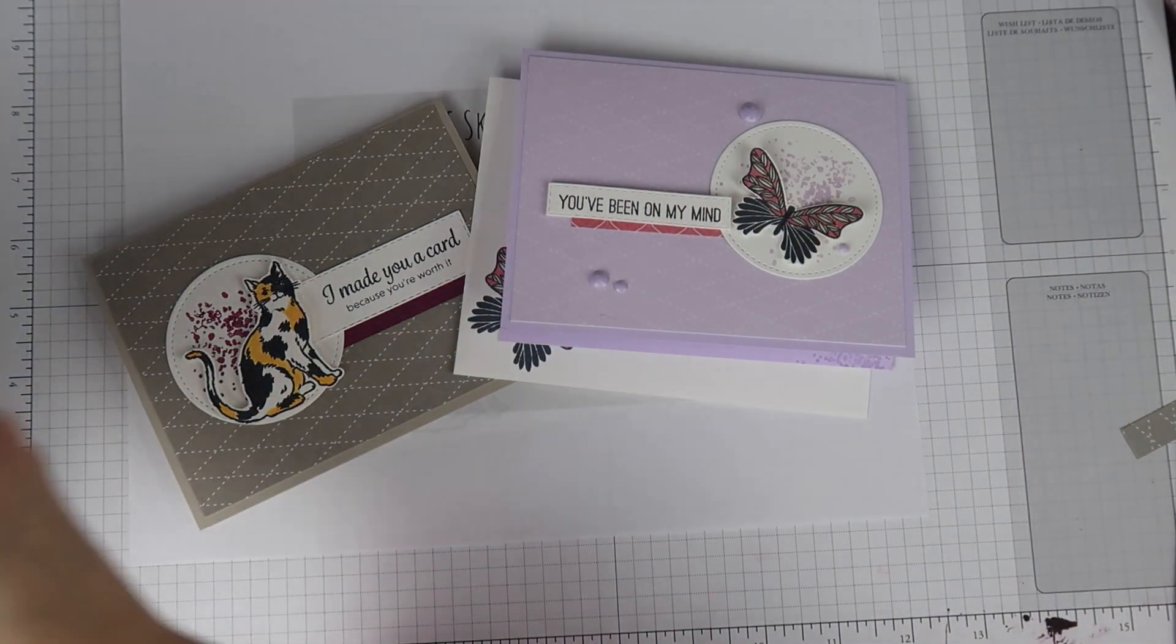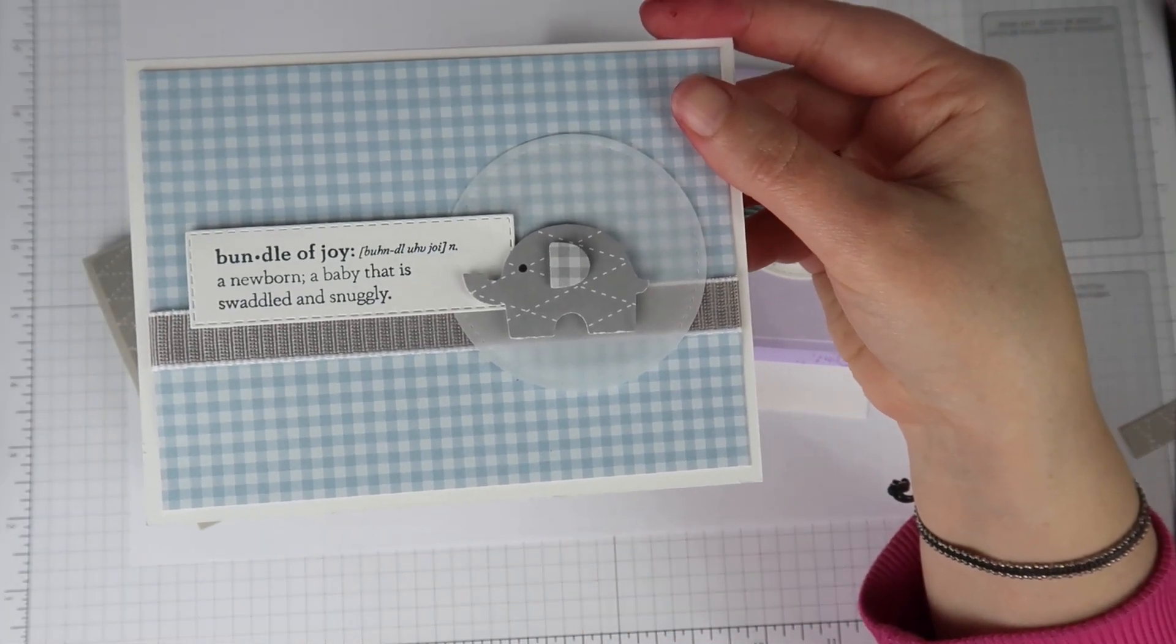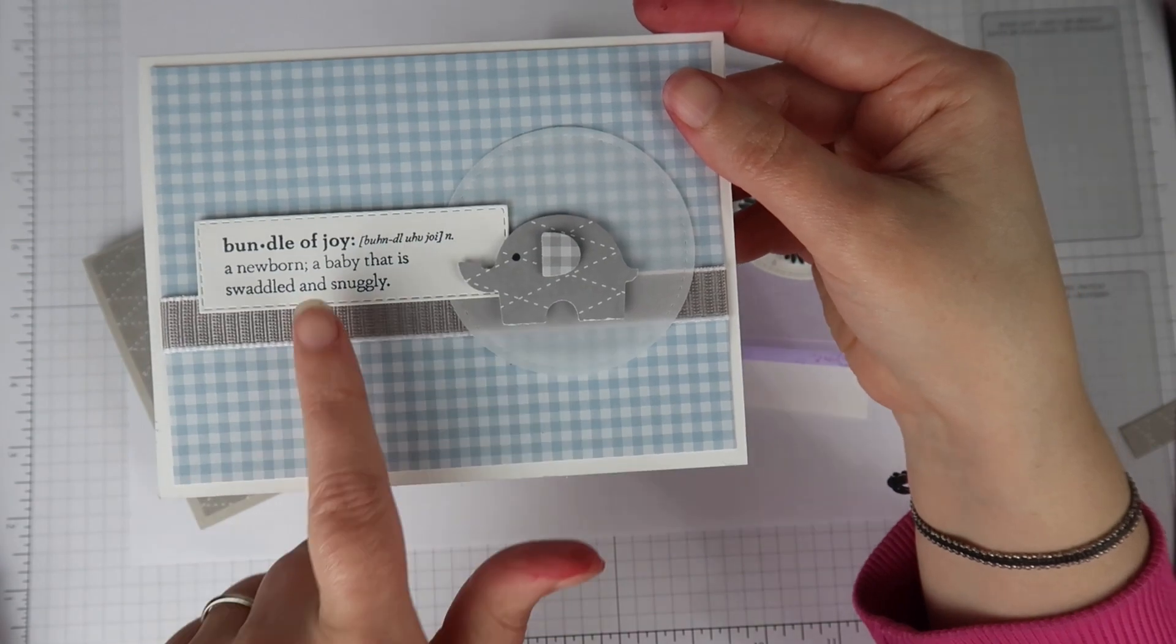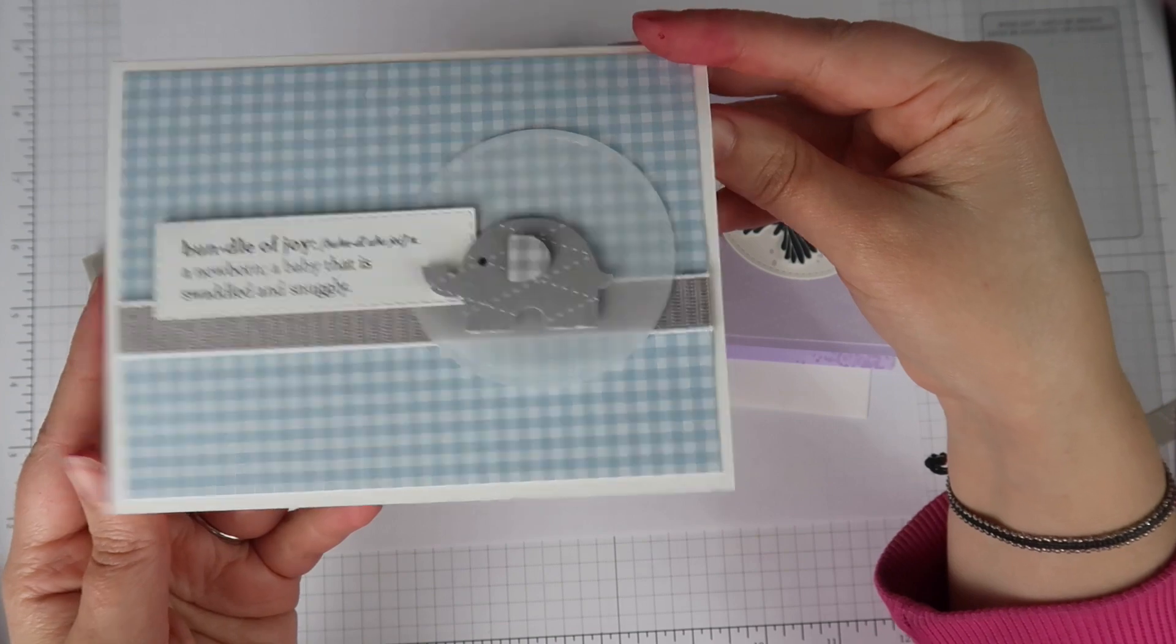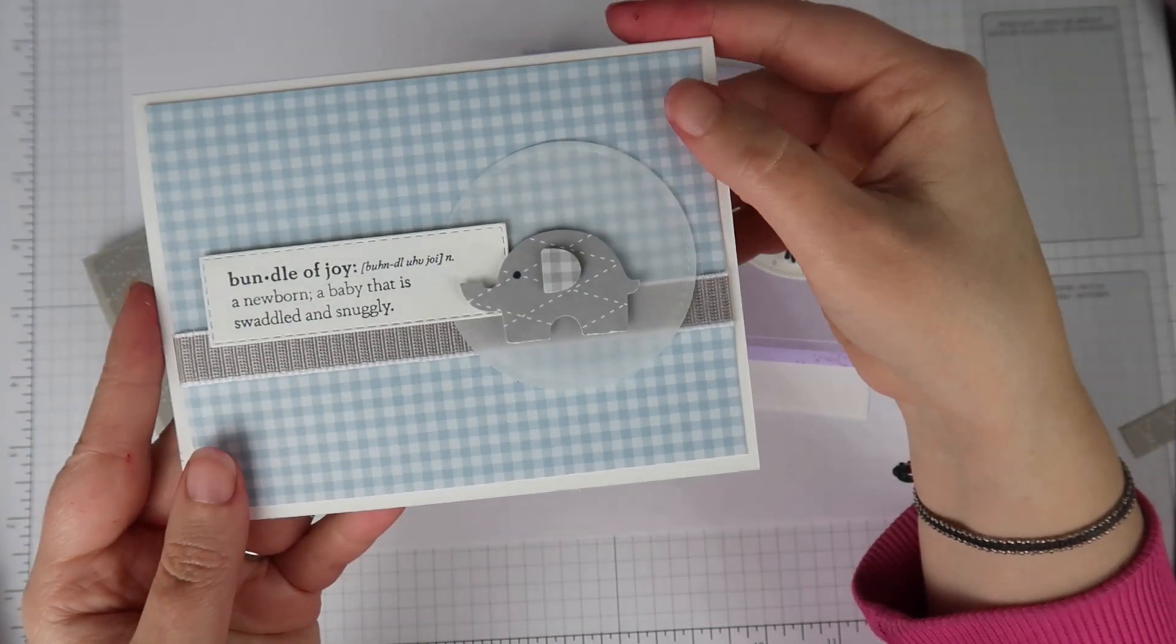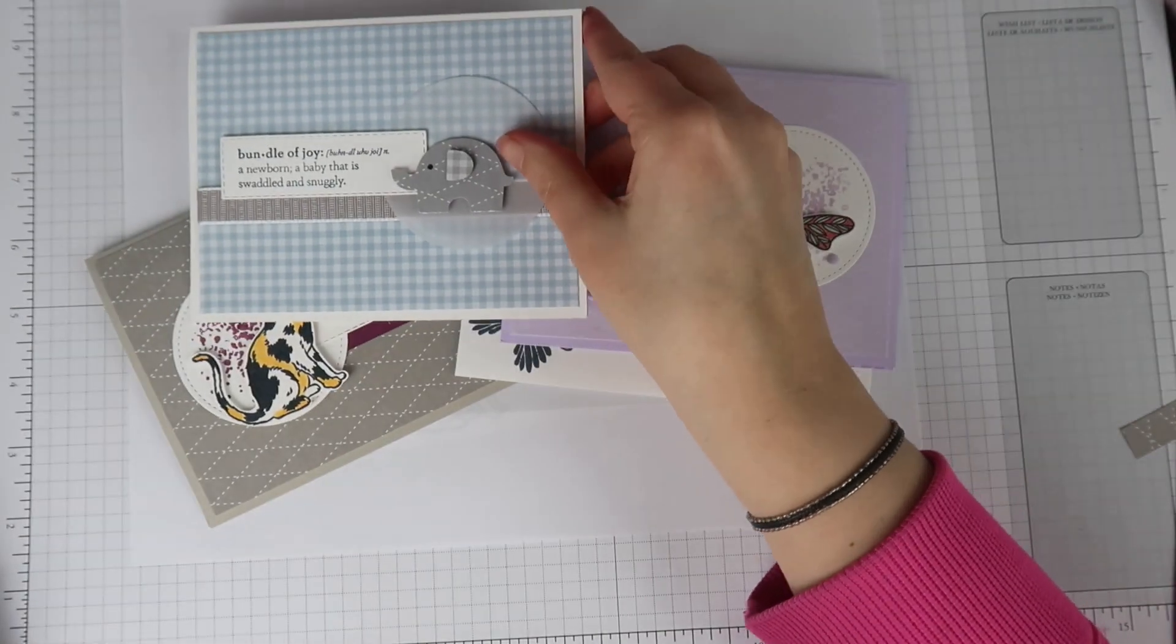For this one, I did a welcome baby card and I used vellum for my circle on this one, which was really fun. I liked the effect that it gave. And then instead of using a strip of paper for my sentiment, I put a ribbon across the panel and I really liked this one. I thought it was so cute.